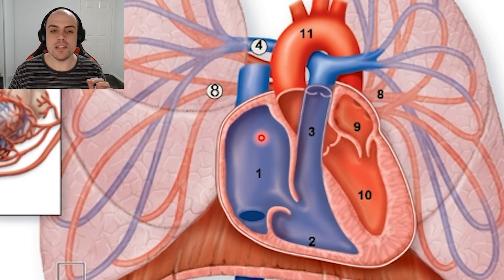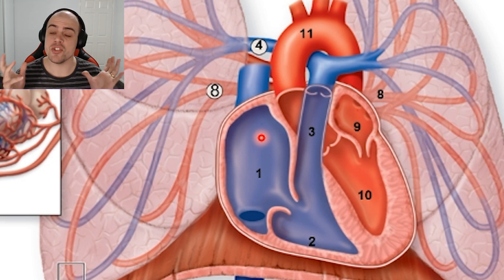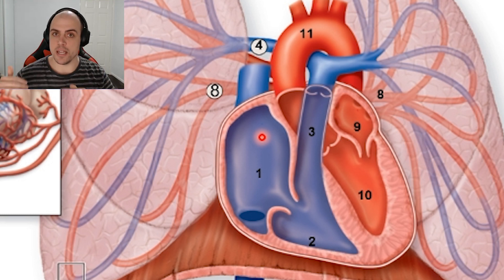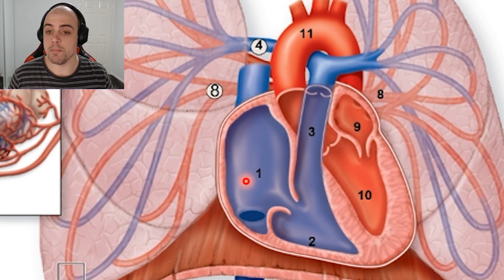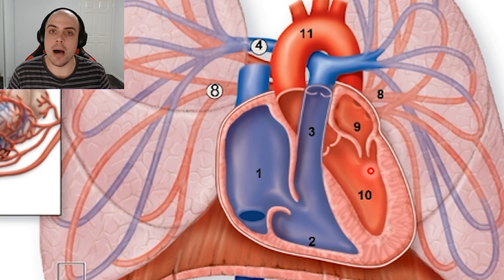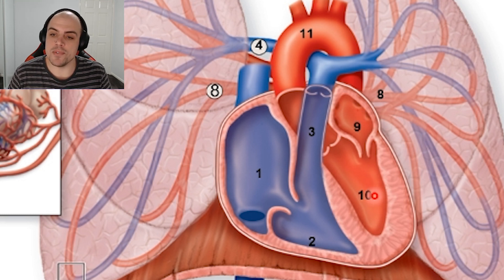Both the pulmonary and systemic circulation are happening at the same time. When the atria constrict, they push blood into the ventricles on both sides simultaneously. On the left side, the atria constricts and pushes blood through the bicuspid valve, or mitral valve, into the left ventricle.